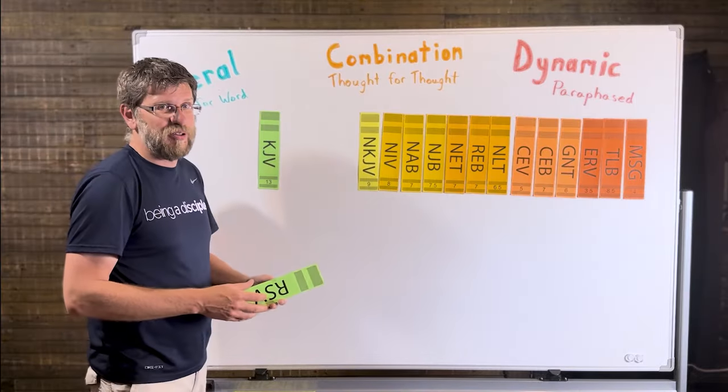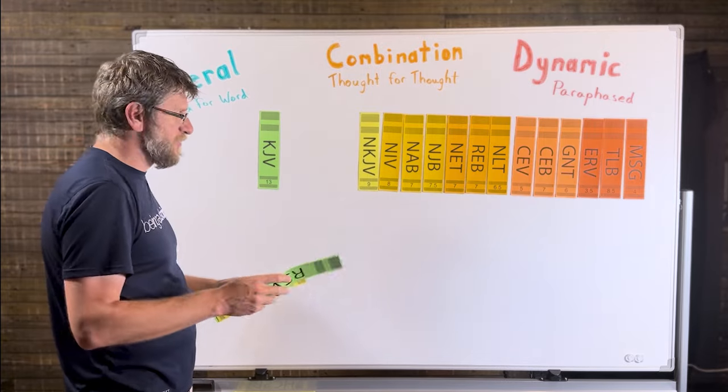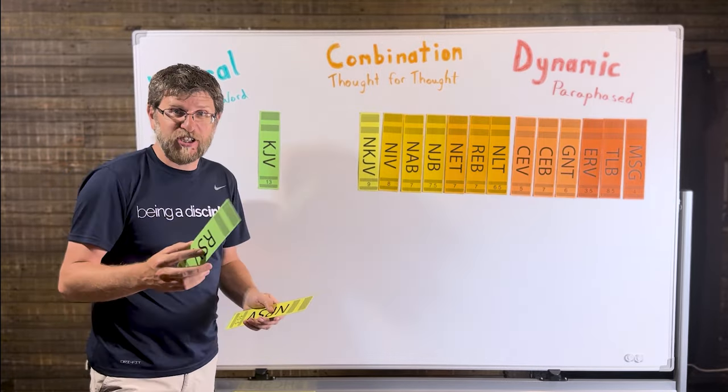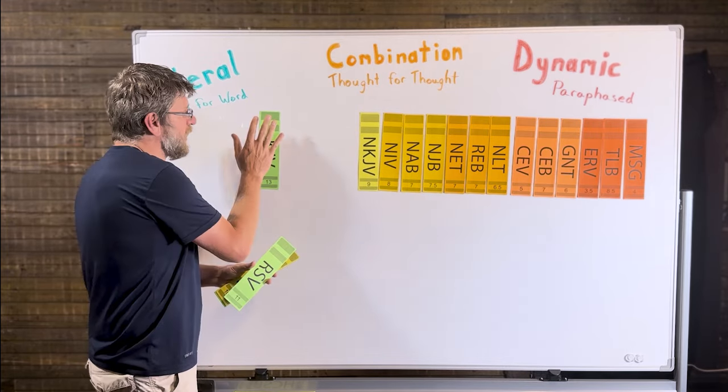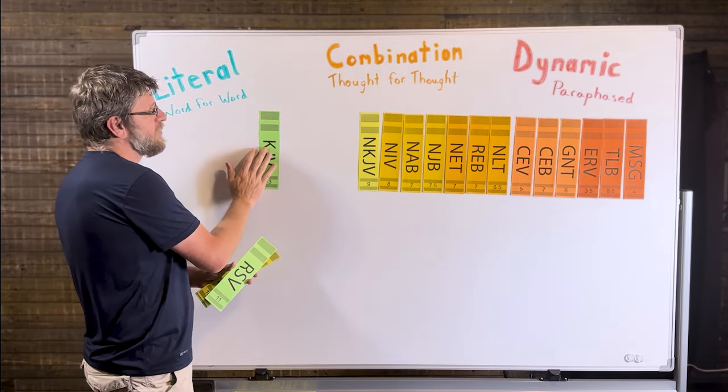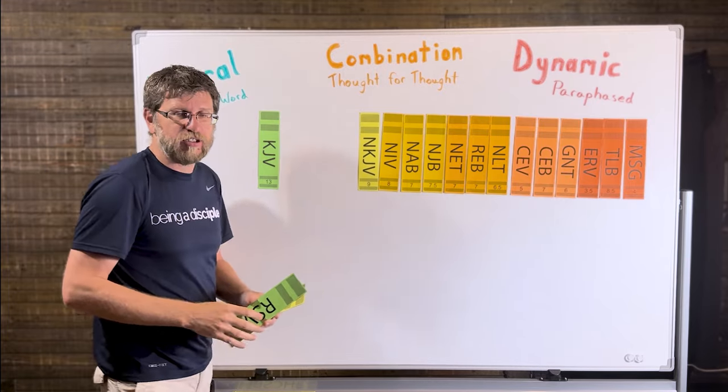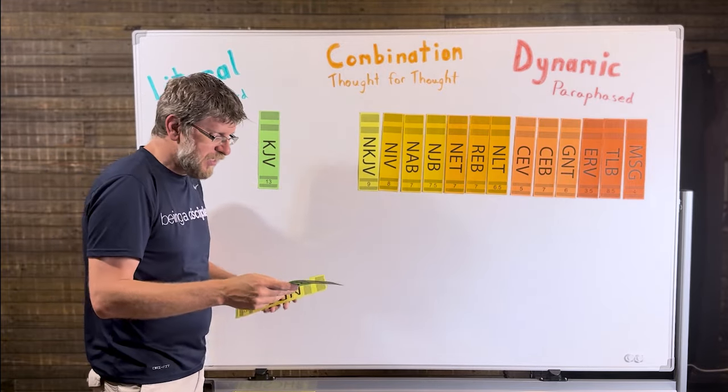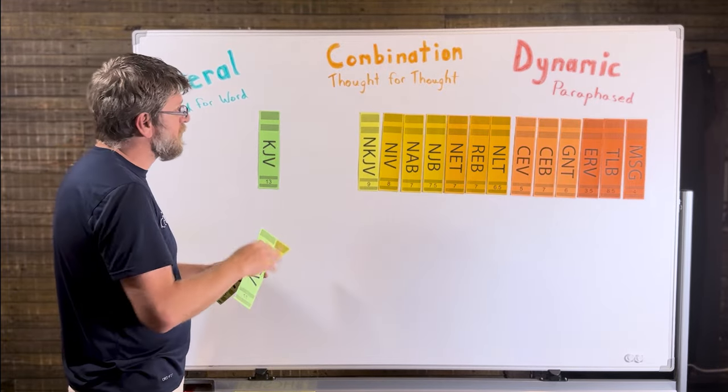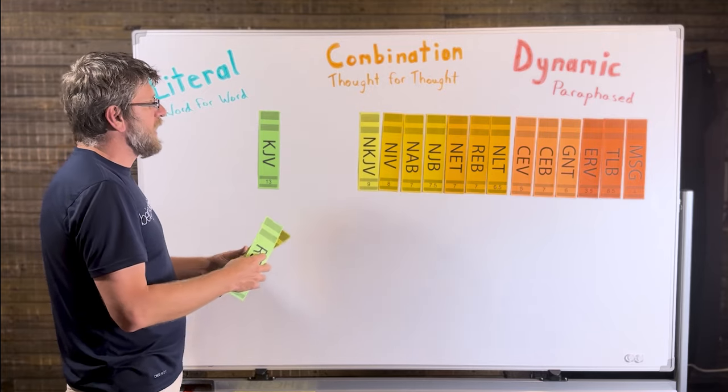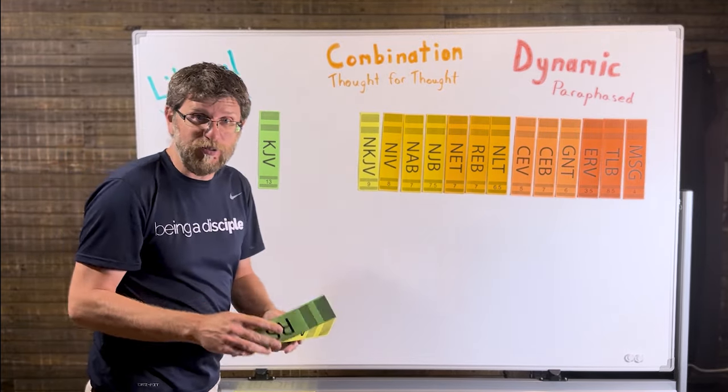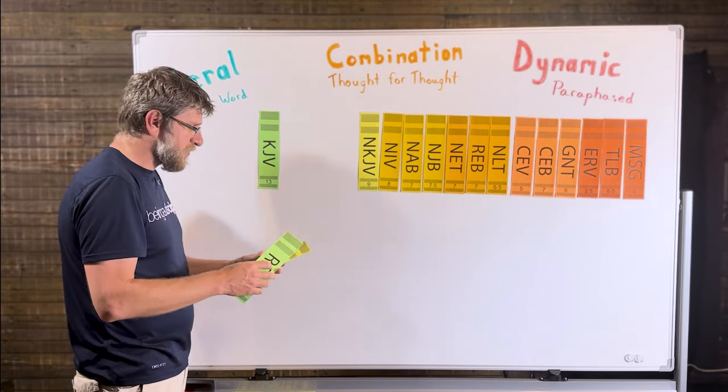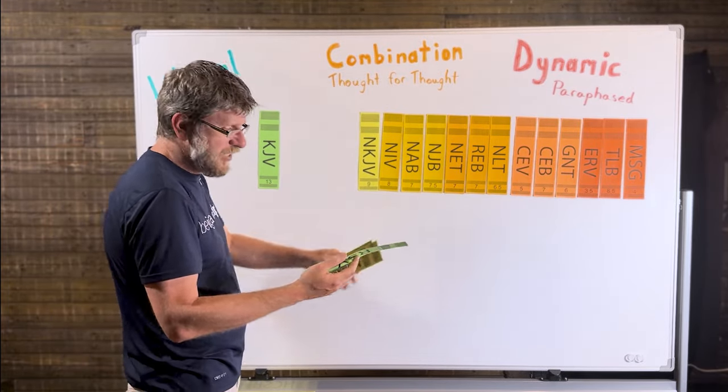We then come to the Revised Standard Version. This one has a decently long history as well. This began in the early 1900s. They were trying to take what the King James had done, but bring it into a modern day structure in modern day English. And they took it out of the American Standard Version into the first Revised Standard in 1952. And then in 1982 or 89, they get the New Revised Standard.